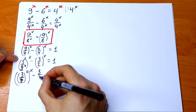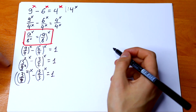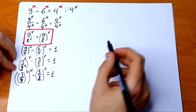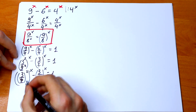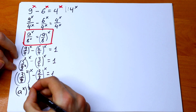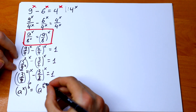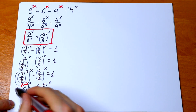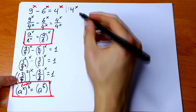So the equation becomes (3/2)^(2x) minus (3/2)^x equal to 1. The next rule I'm going to use is the rule of interchange: if I have a to the power x all raised to the power b, I can write it as a to the power b all raised to the power x — I can swap the exponents. This is the second rule we need.